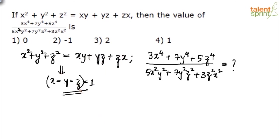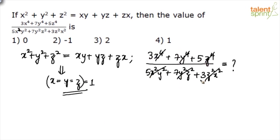Now if x = y = z, the x⁴, y⁴, z⁴ in the numerator and the x²y², y²z², z²x² in the denominator all become x⁴, so x⁴ cancels. What are we left with? Numerator: 3 + 7 + 5 = 15. Denominator: 5 + 7 + 3 = 15. So 15 by 15 equals 1, and option 4 is your answer.